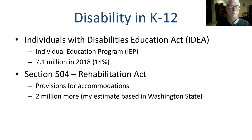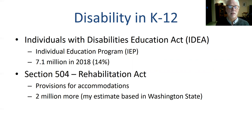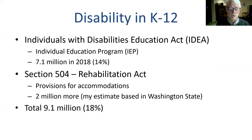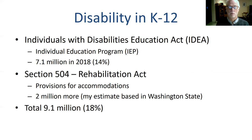The second group are those under Section 504 of the Rehabilitation Act. Those students don't have a different education plan; what they do have are provisions for accommodations. By my estimate — and it's hard to find real numbers — it's about 2 million more students in the United States. So that would be 9.1 million students, or about 18%. That's almost one out of five students who have a recognized disability in K through 12 education in the United States.